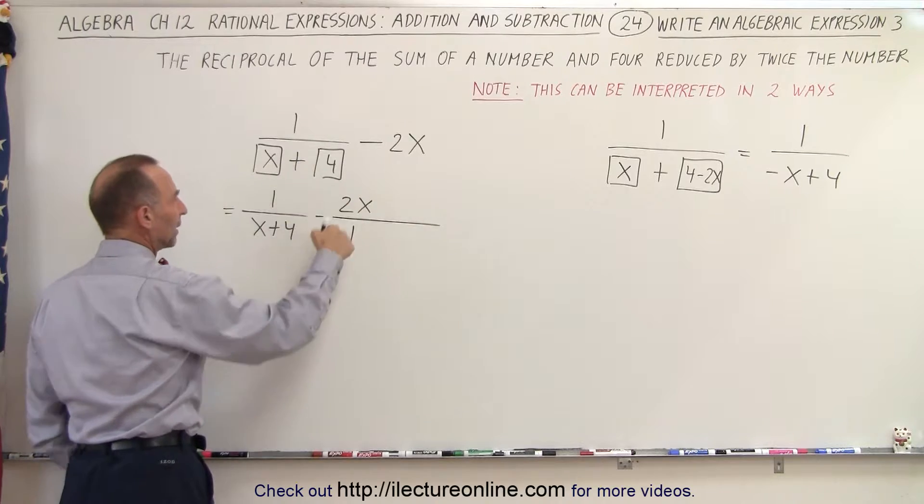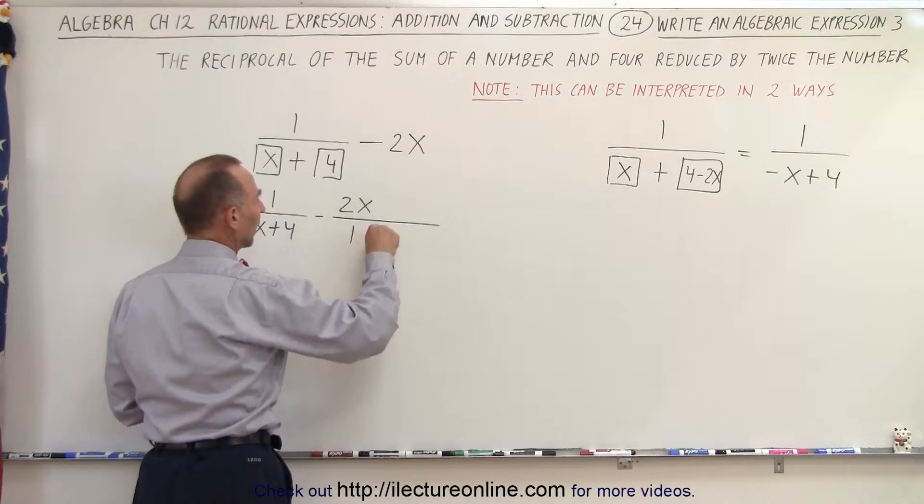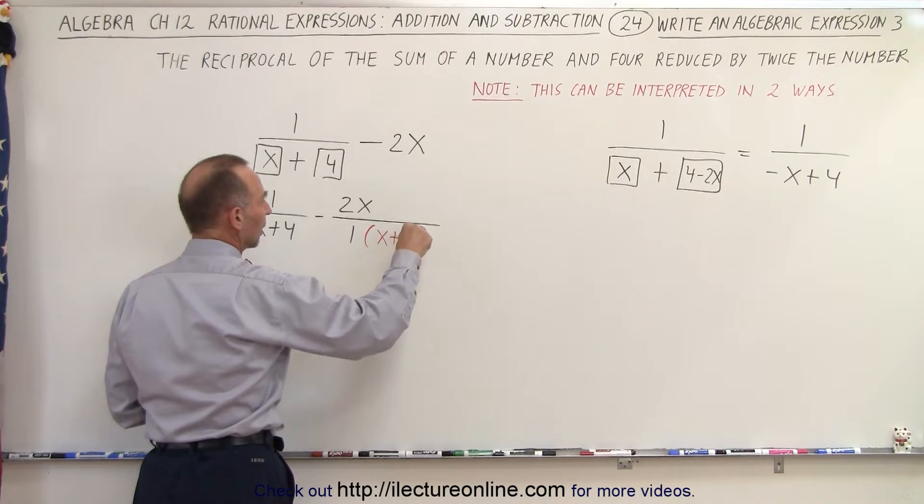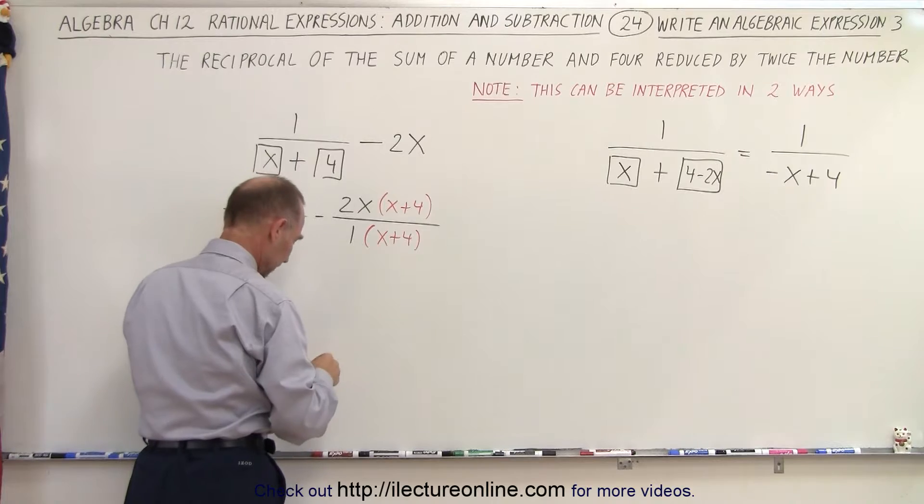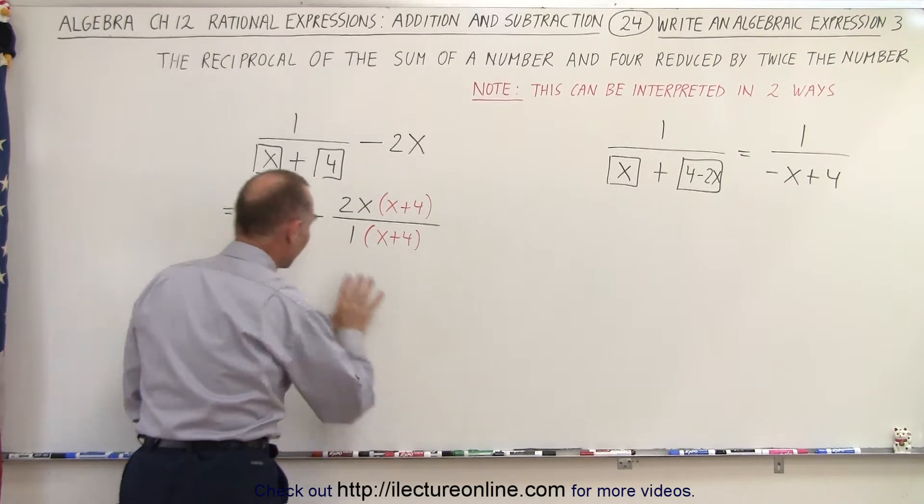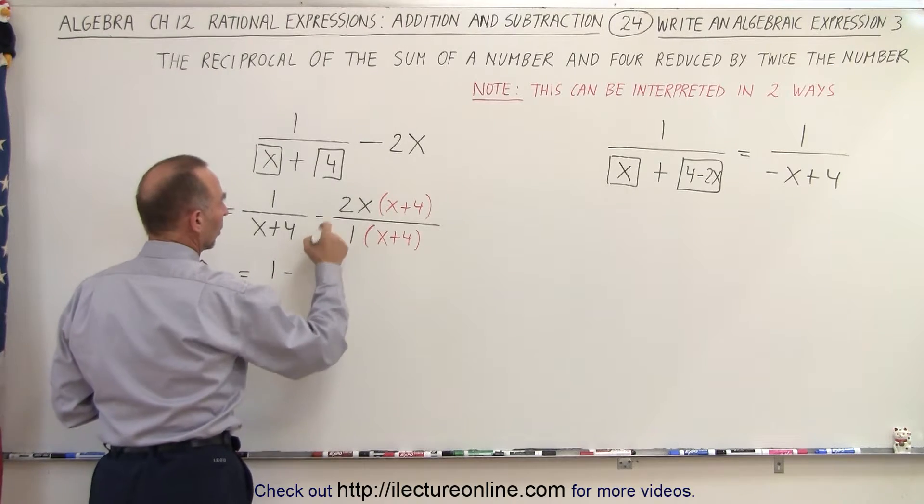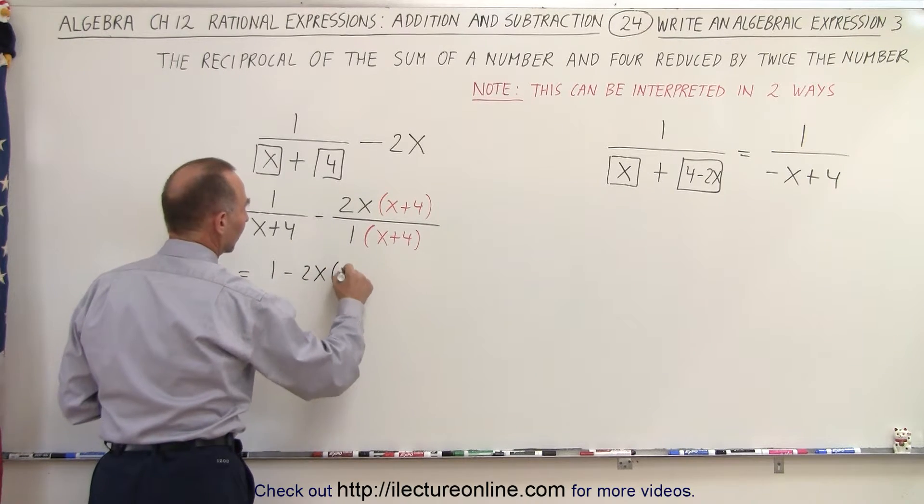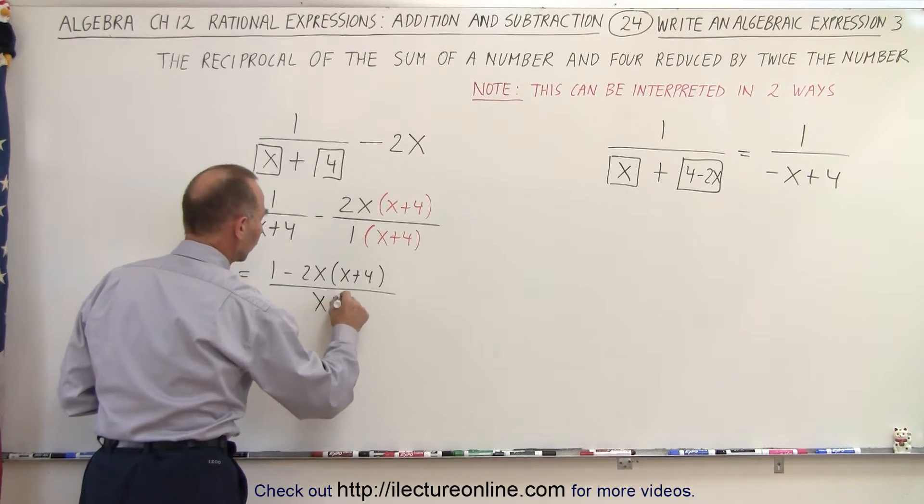So now in order to make this a common denominator we have to multiply this denominator by x plus 4 and we have to multiply the numerator by x plus 4 as well. And then we have one common denominator and the numerator can be written as 1 minus 2x times x plus 4 all over x plus 4.